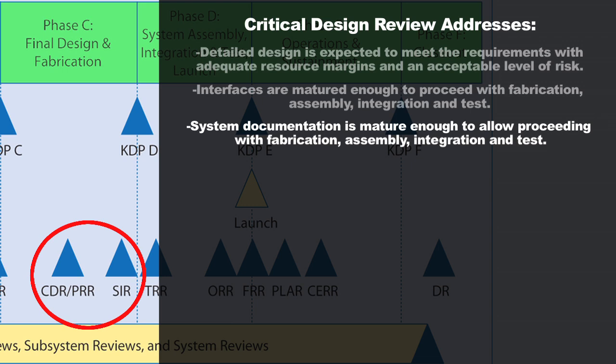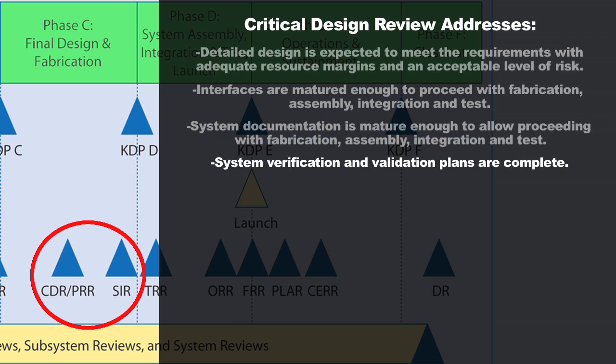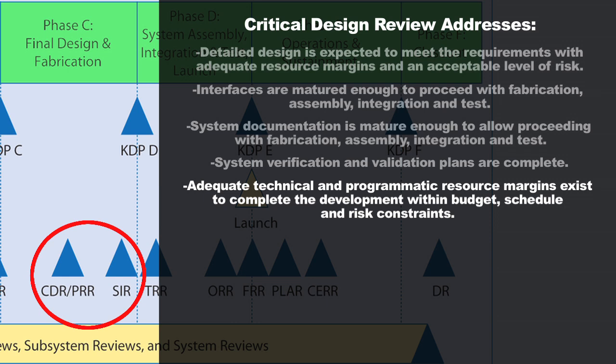The review team will make sure system documentation is mature enough to allow proceeding with fabrication, assembly, integration, and test — checking that all test plans and procedures are identified and the integration process is well-defined. They'll also verify that system verification and validation plans are complete down to the lower levels, ensuring you can verify and validate components through the subsystems and up to the full system as you start to build up the spacecraft in the next phase. They'll look for adequate technical and programmatic resource margins to confirm you can complete the development within budget and schedule without asking for more funds or missing your launch date.